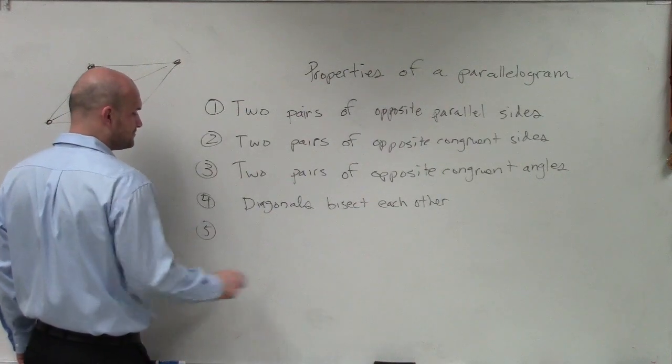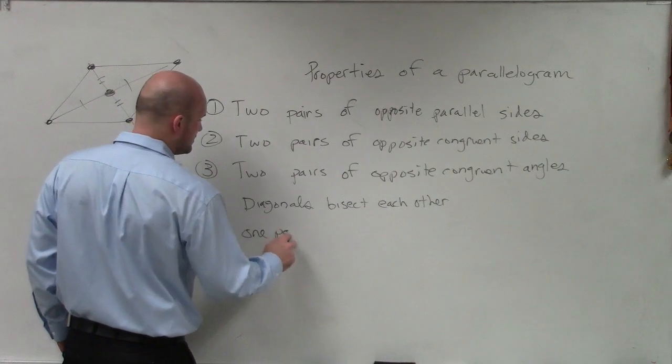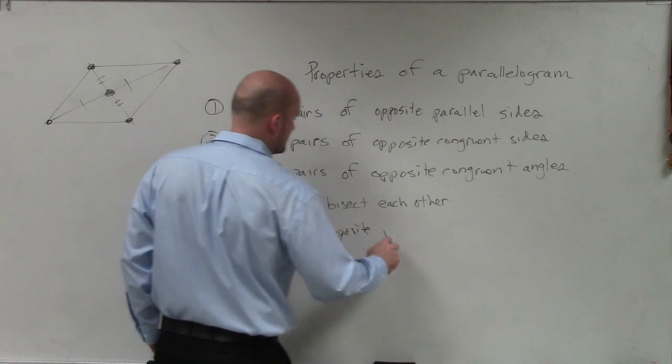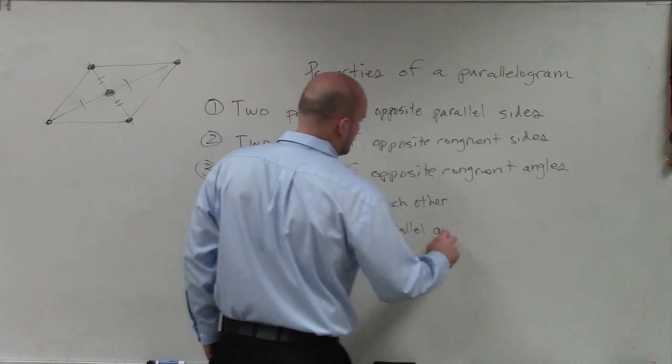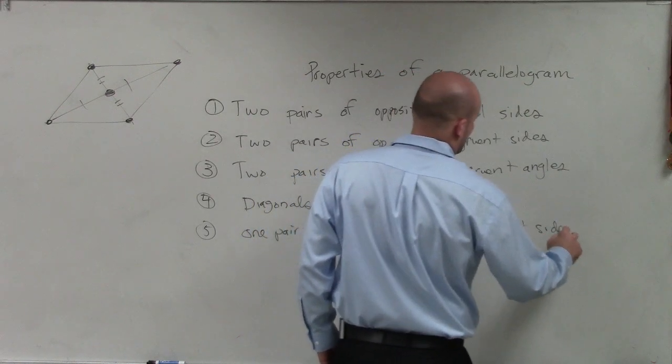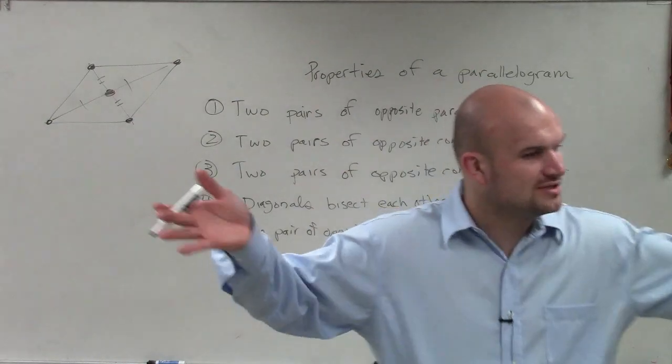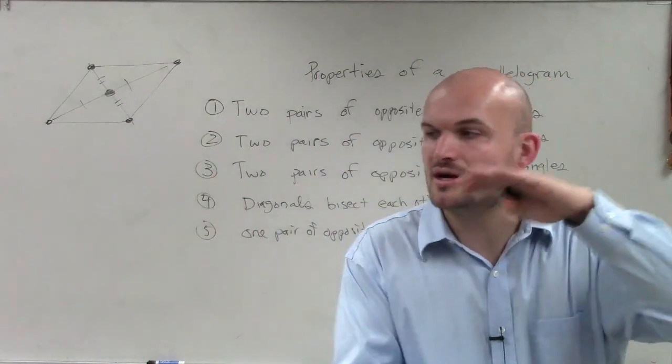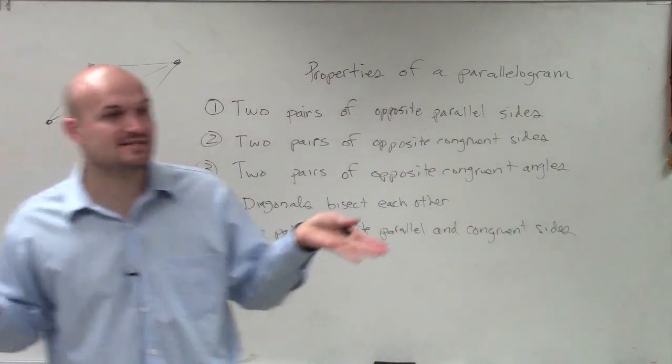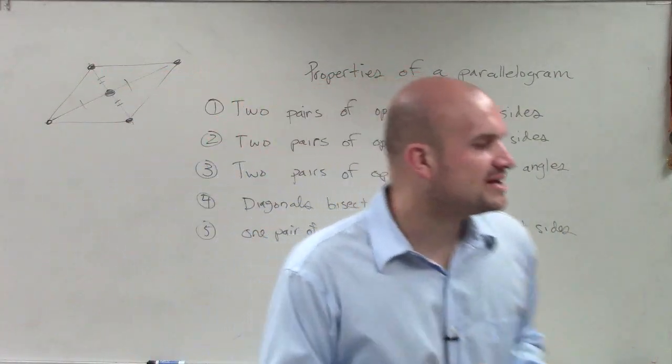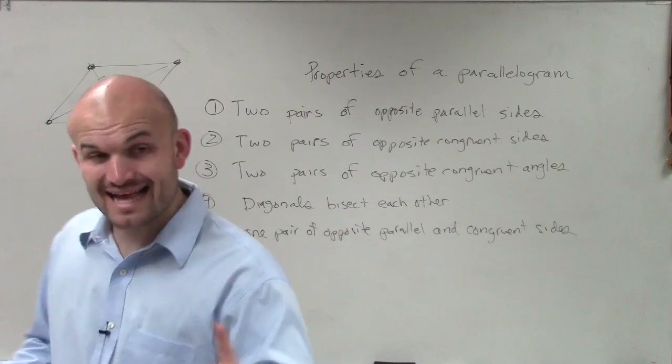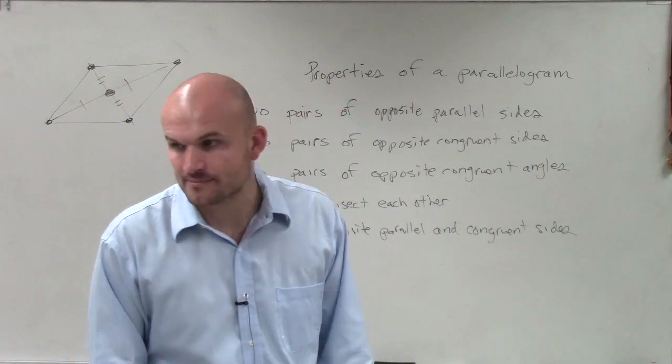And the last one, ladies and gentlemen, is if you have one pair of opposite, parallel, and congruent sides. So we talked about, hey, if both sides, if you have two pairs of opposite sides that are parallel, then it's a parallelogram. If you have two pairs of opposite sides that are congruent, it's a parallelogram. But guess what? If you can show me that one pair that are opposite sides are parallel, and they're congruent, that also makes it a parallelogram.